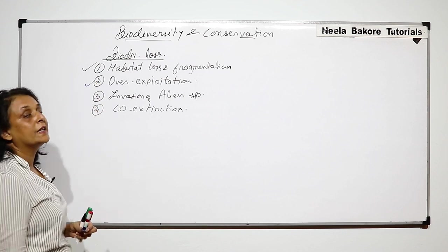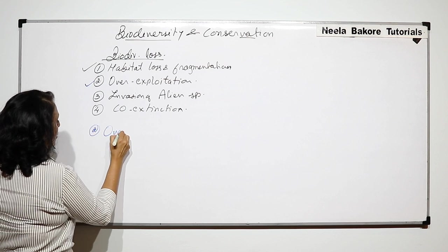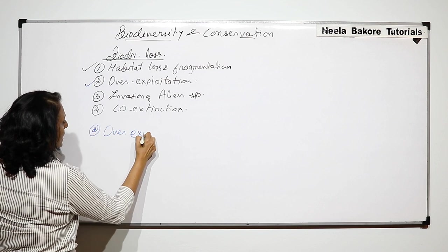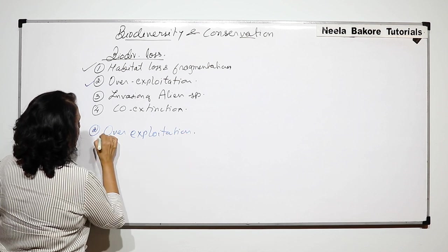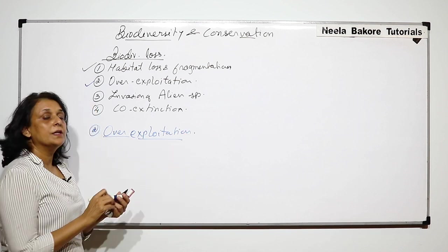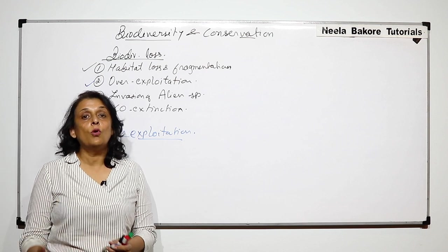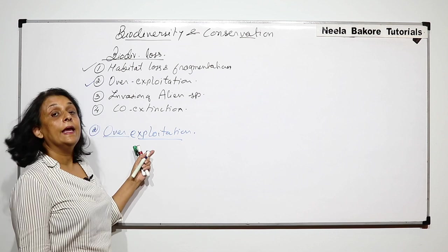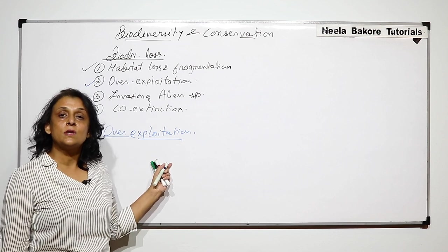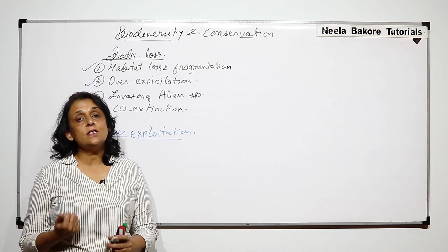Let us start with over-exploitation. Over-exploitation is when we start using the natural resource more than what we require. And if those are living organisms, then that particular species is lost.